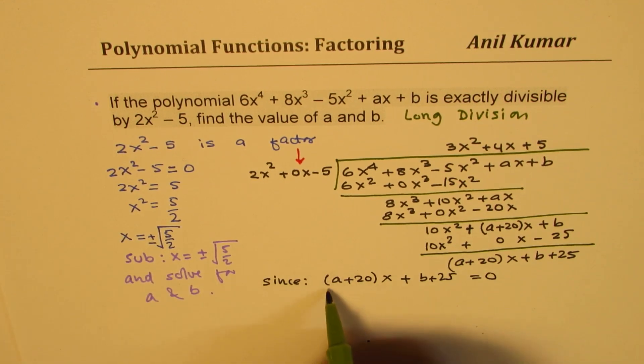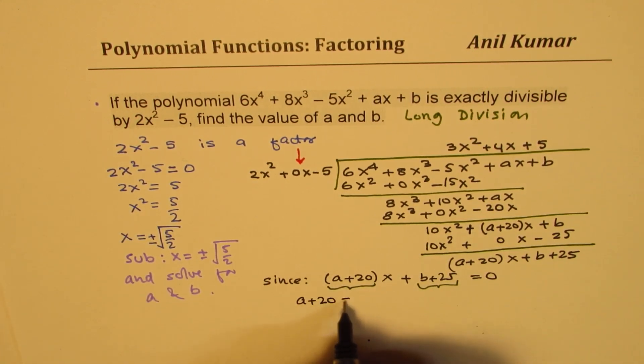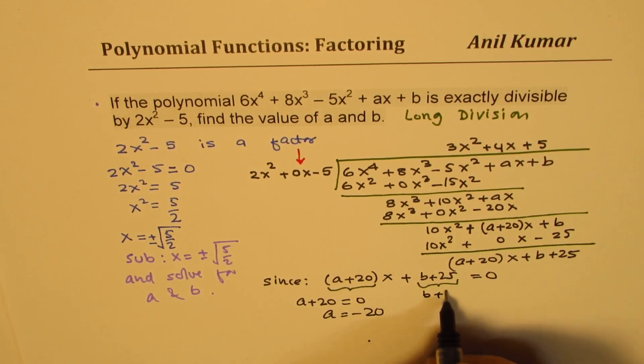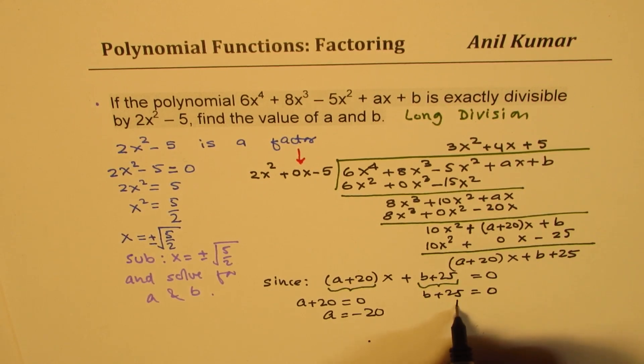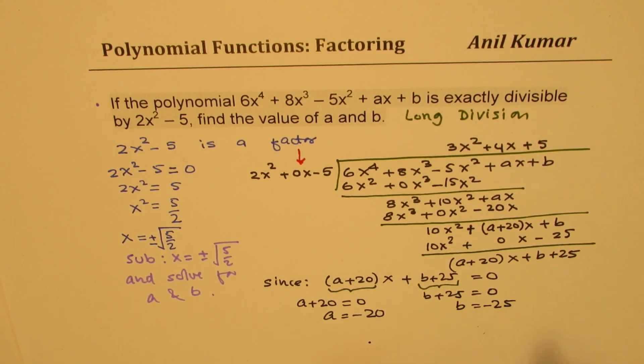It really means that a plus 20 should be 0, and this is also equal to 0. That means that a plus 20 equals to 0, or a equals to minus 20. And here, b plus 25 equals to 0, and that means b equals to minus 25.